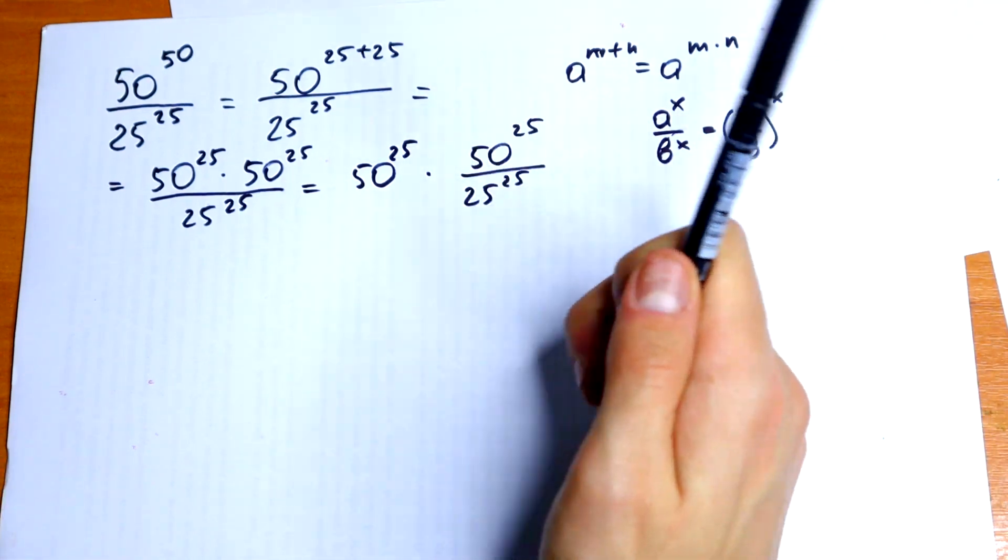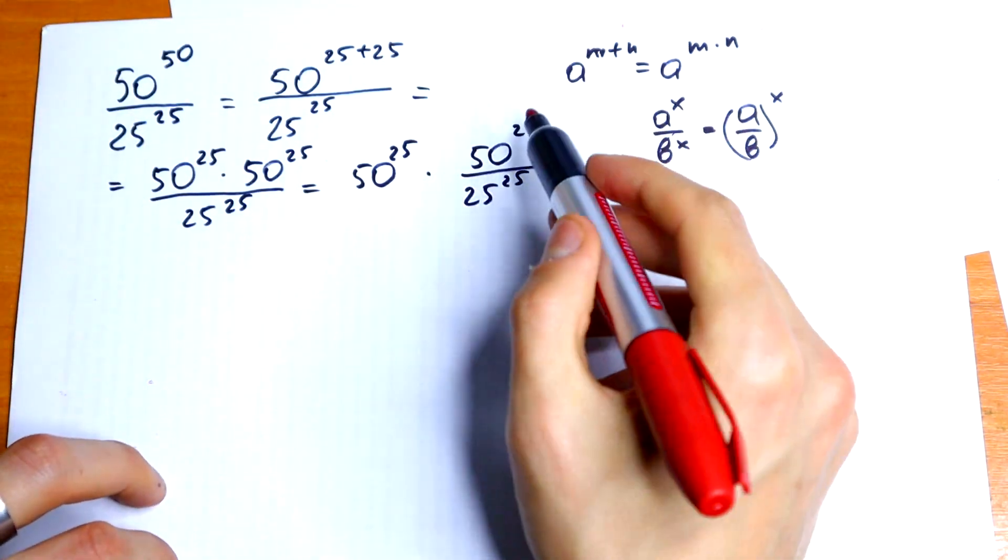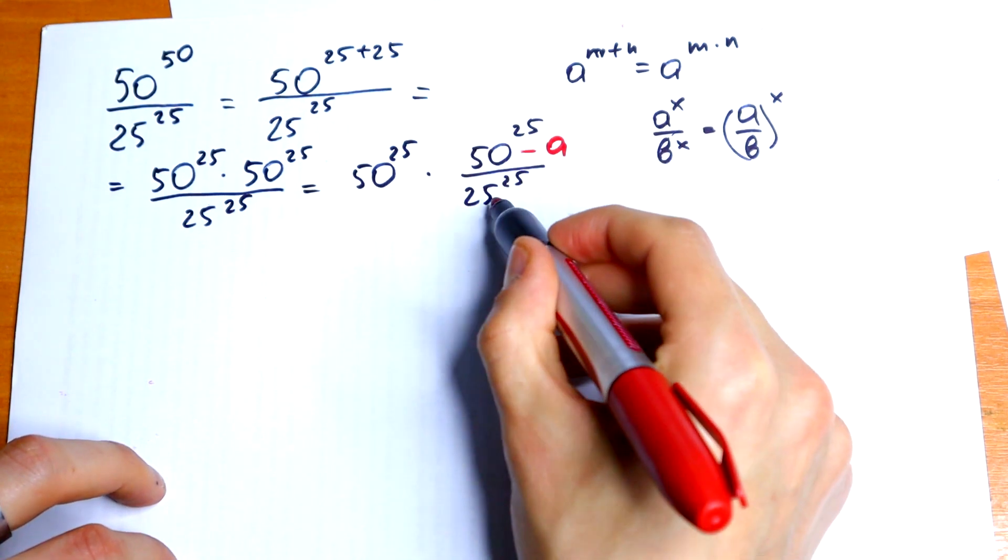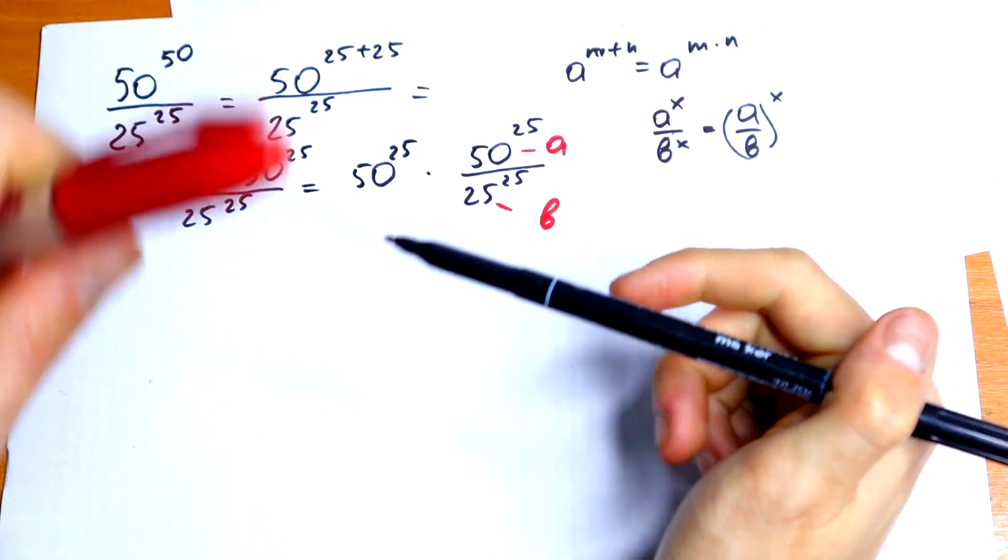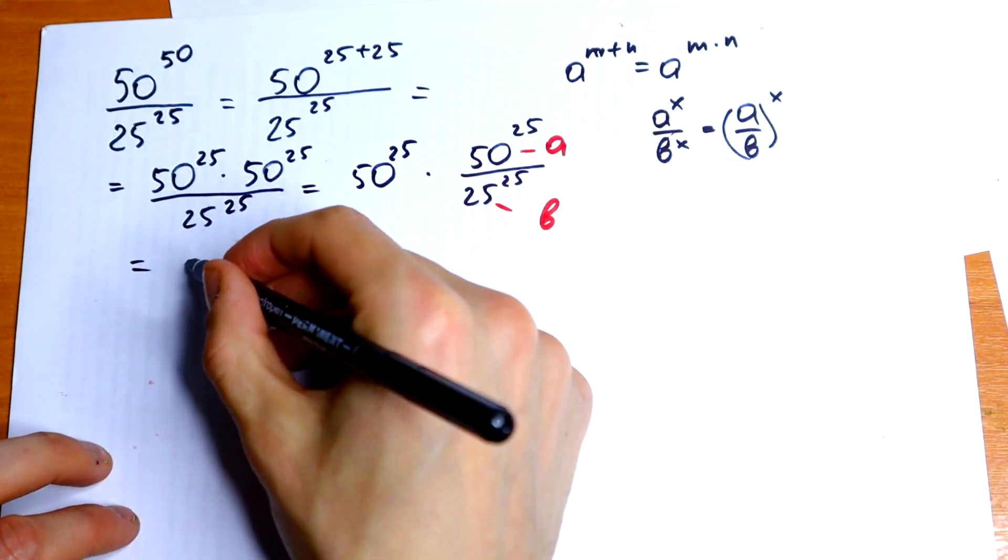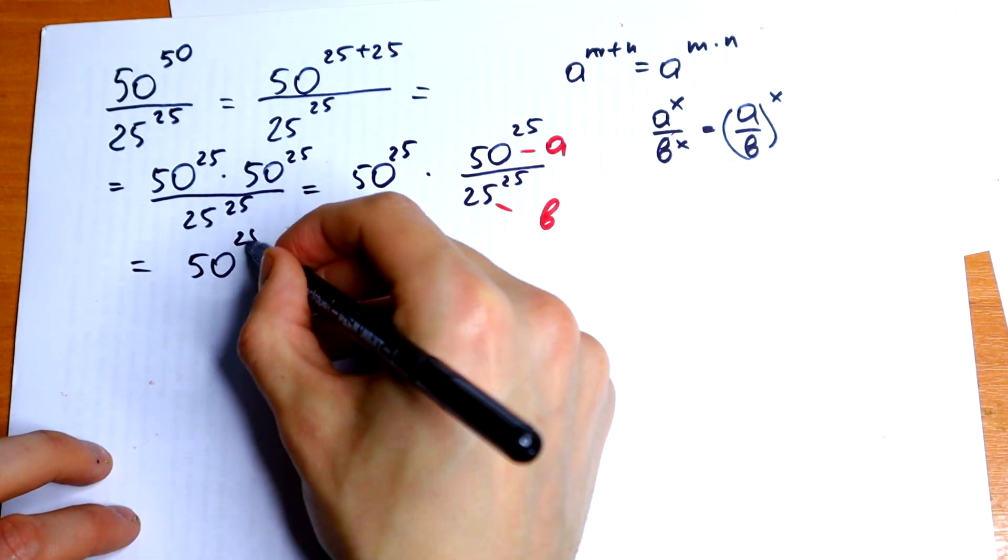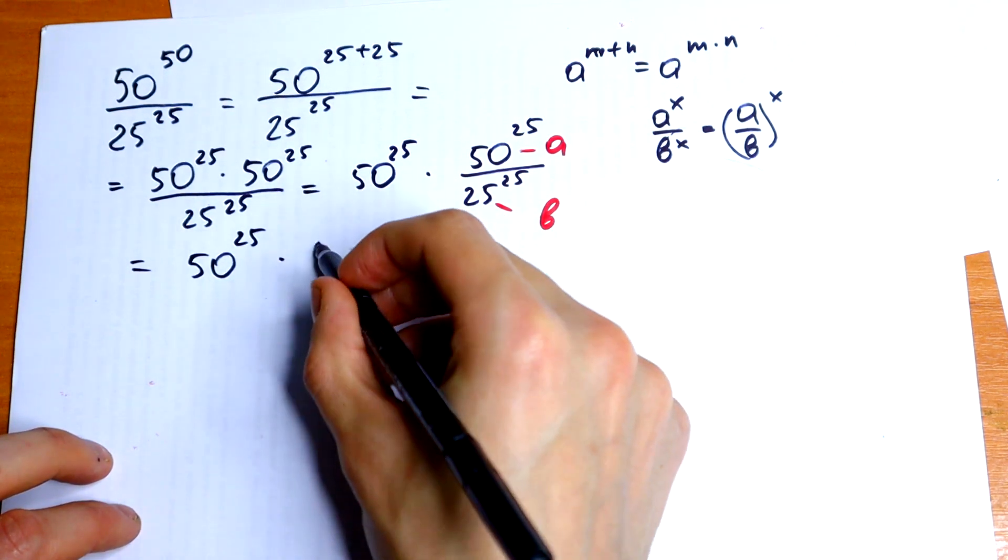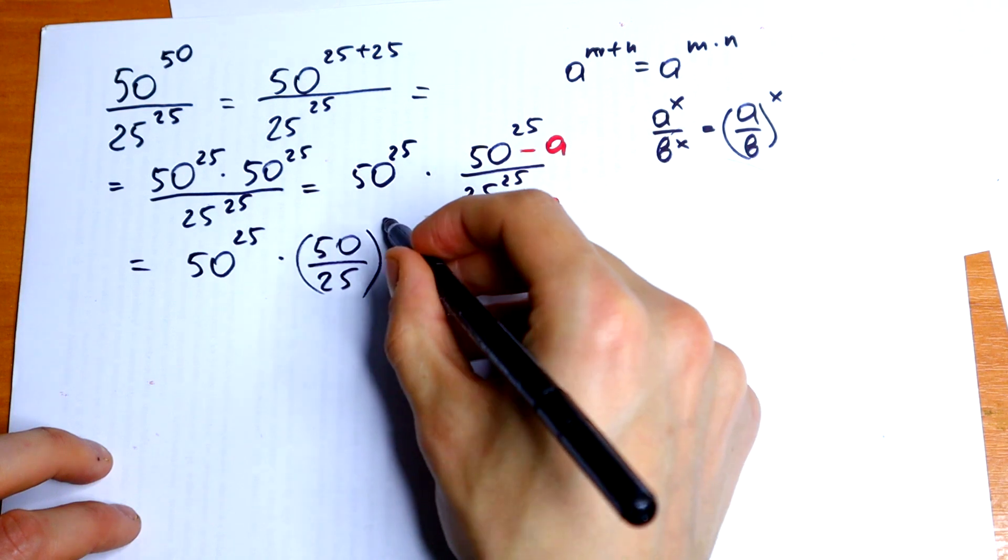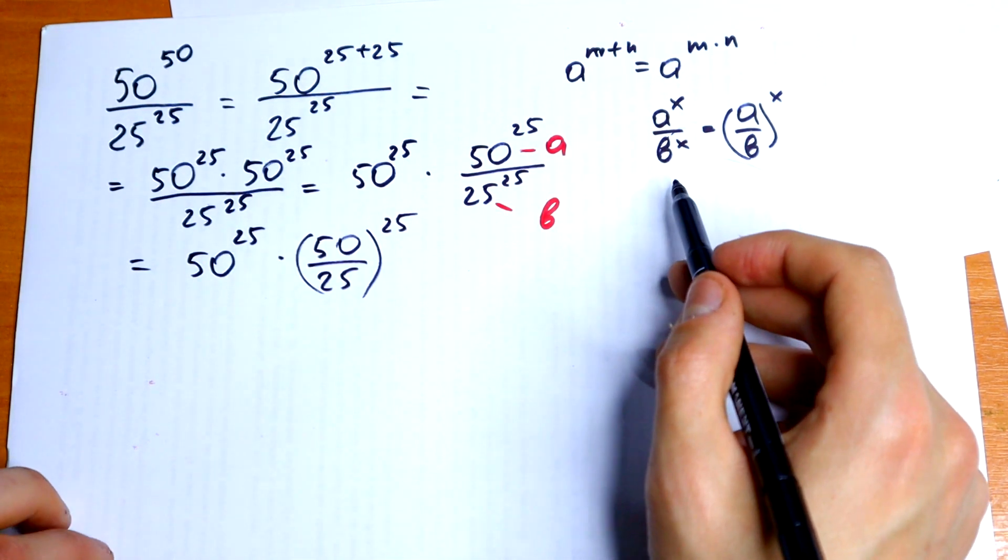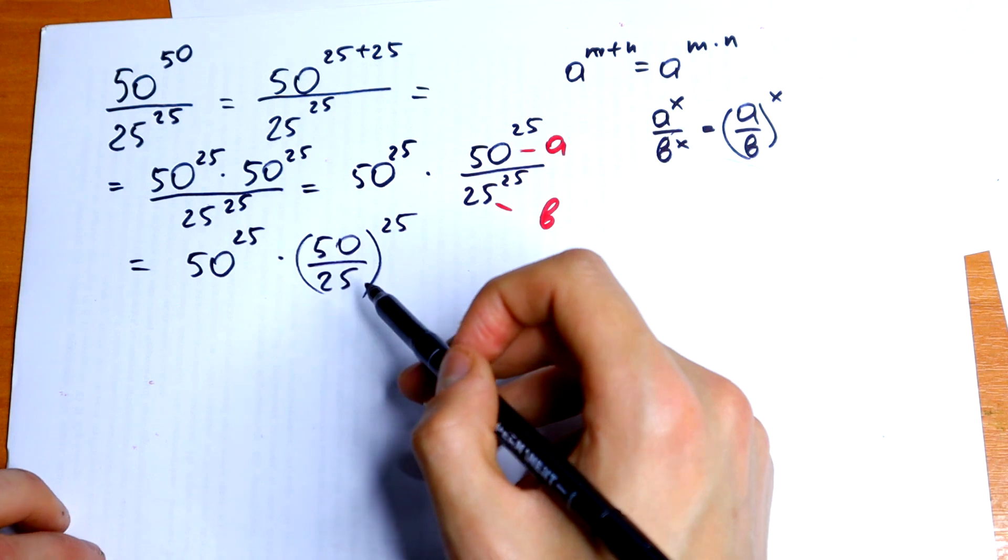I have that right here. 50 is our a and 25 is our b and the same exponent 25. So let's write it like that. 50 to the 25th power times 50 over 25 raised to the 25th power. Just using this rule, nothing hard, write it in one parentheses.